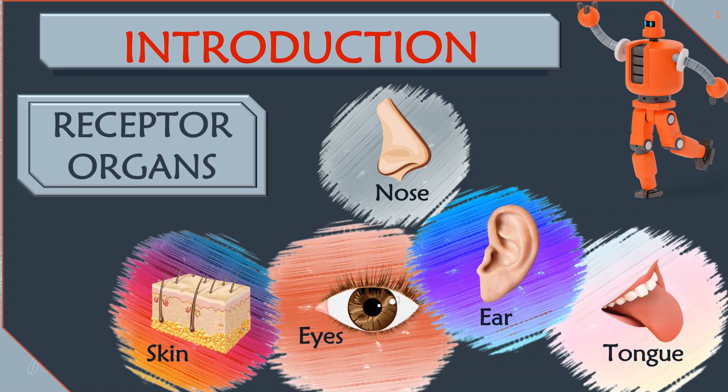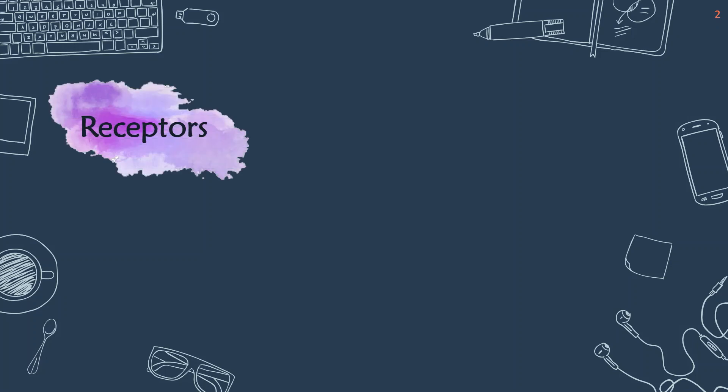eyes, and tongue. The external stimuli received by any one of the receptor organs will become impulses.